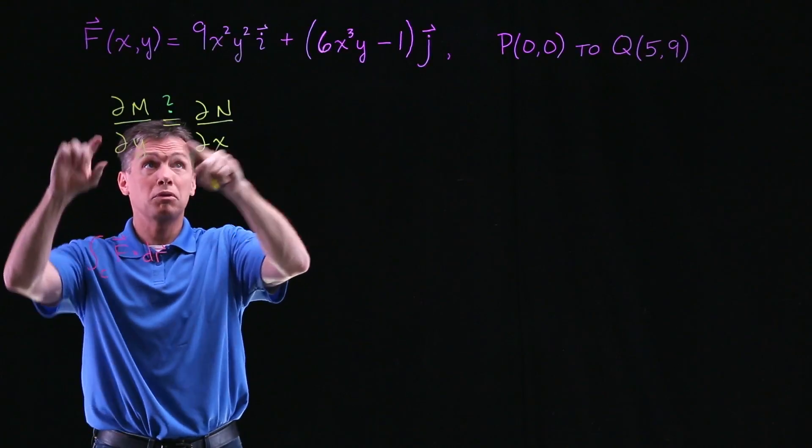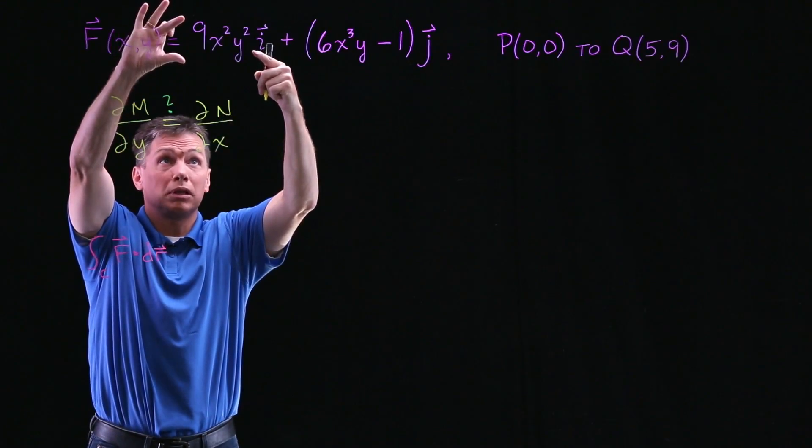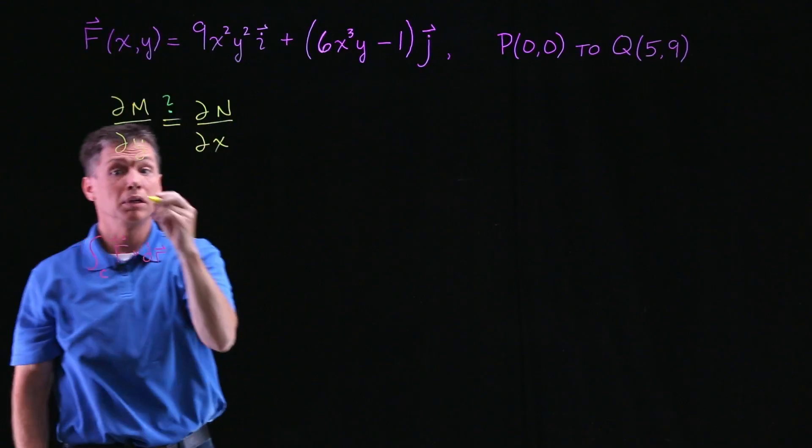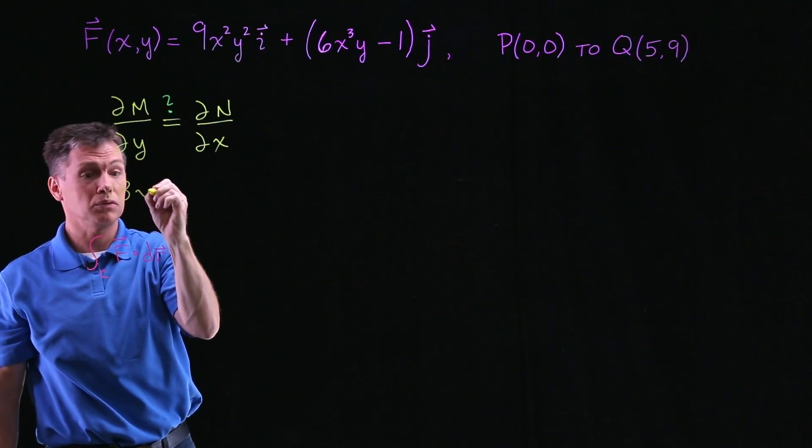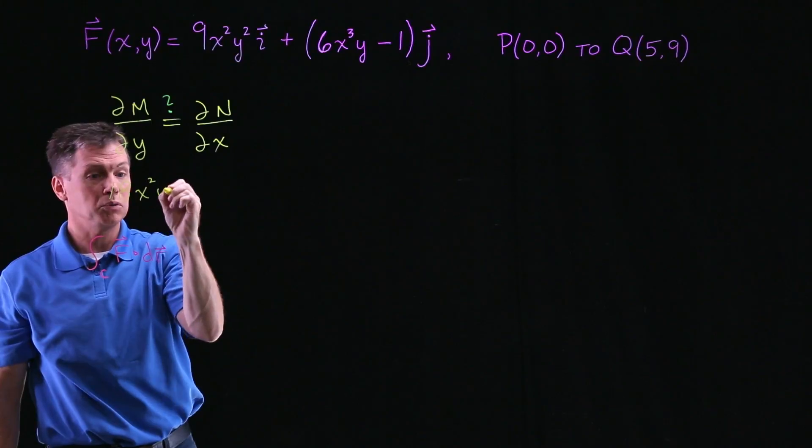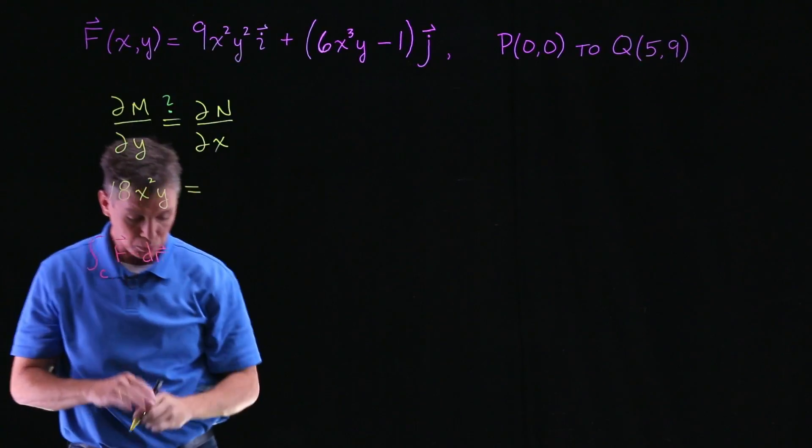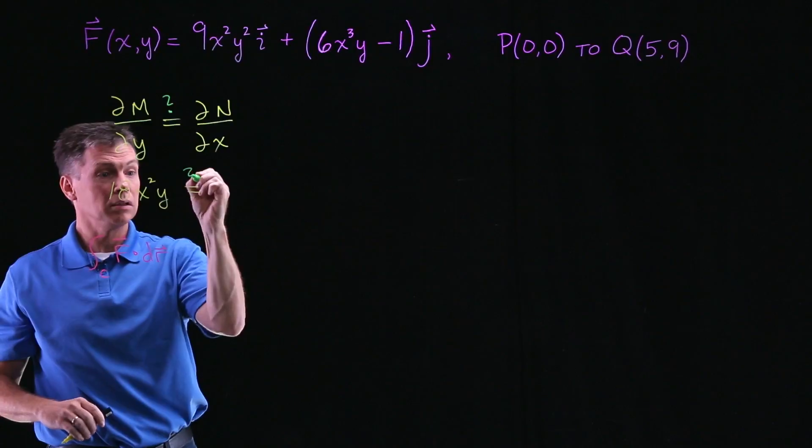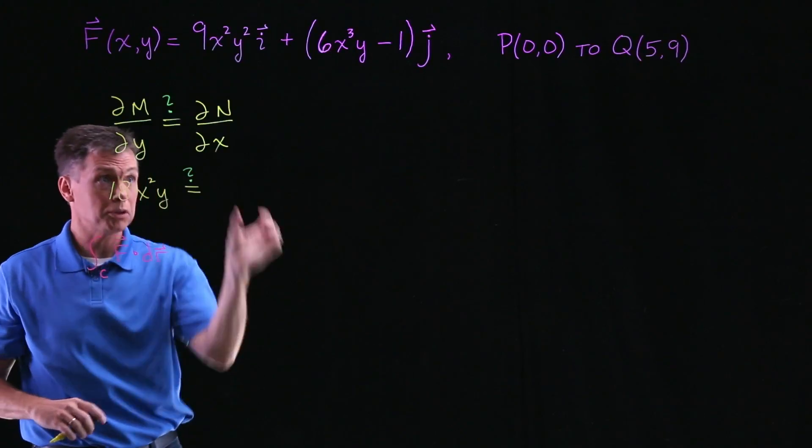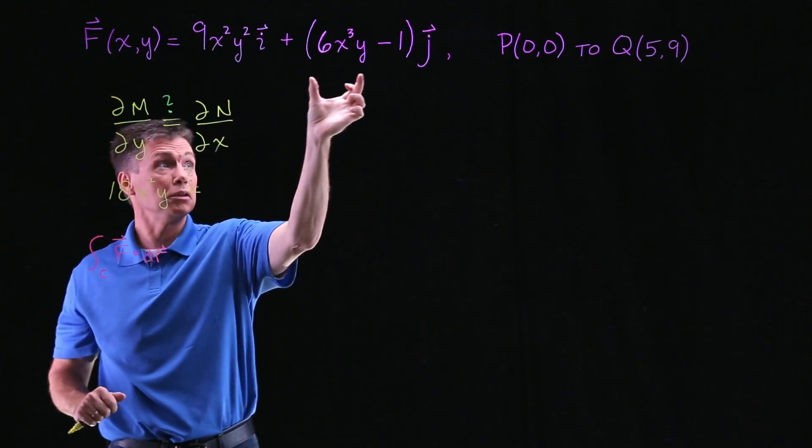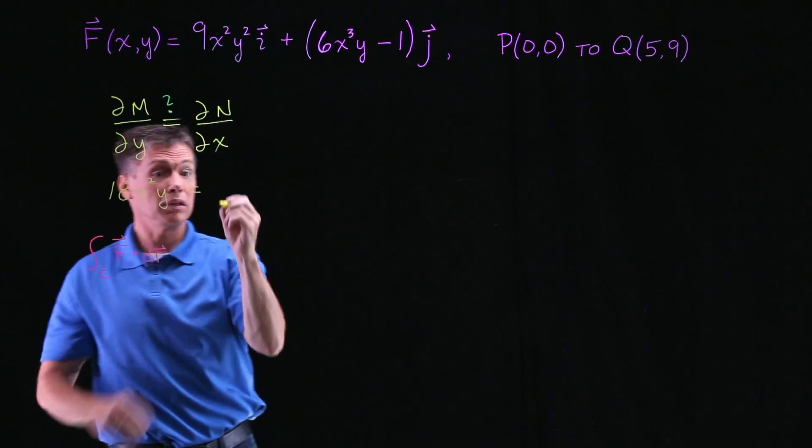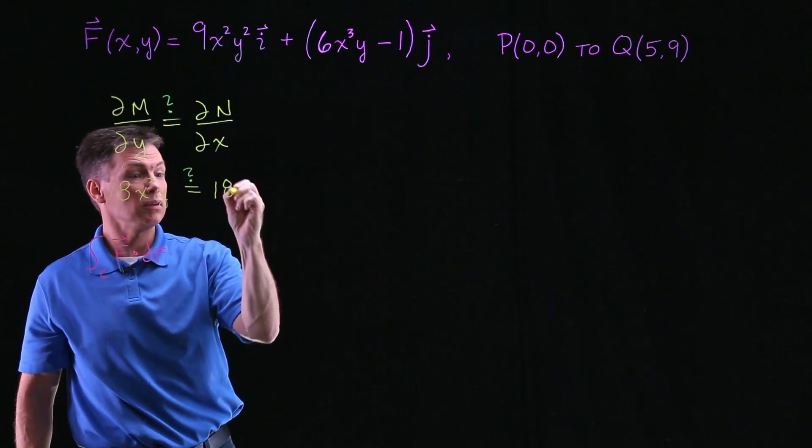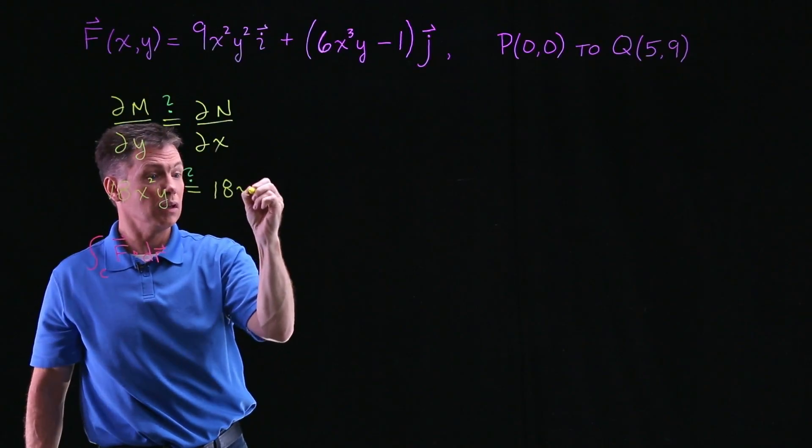So now let's do that work here. The partial of M with respect to Y, so I'm looking at this first component and I'm getting 18X²Y. And I'm still wondering, is that going to end up equaling this other partial? Partial of N, here's my N with respect to X, so that's looking like 18, 3 in front times 6, X drops down a power.